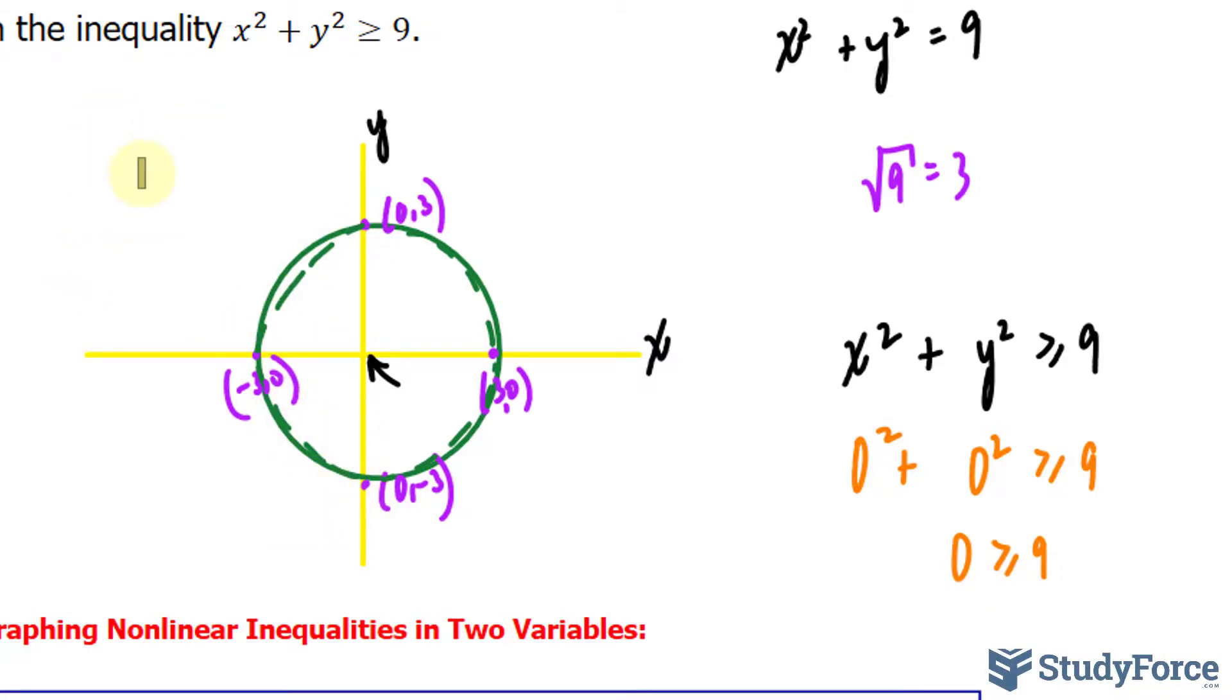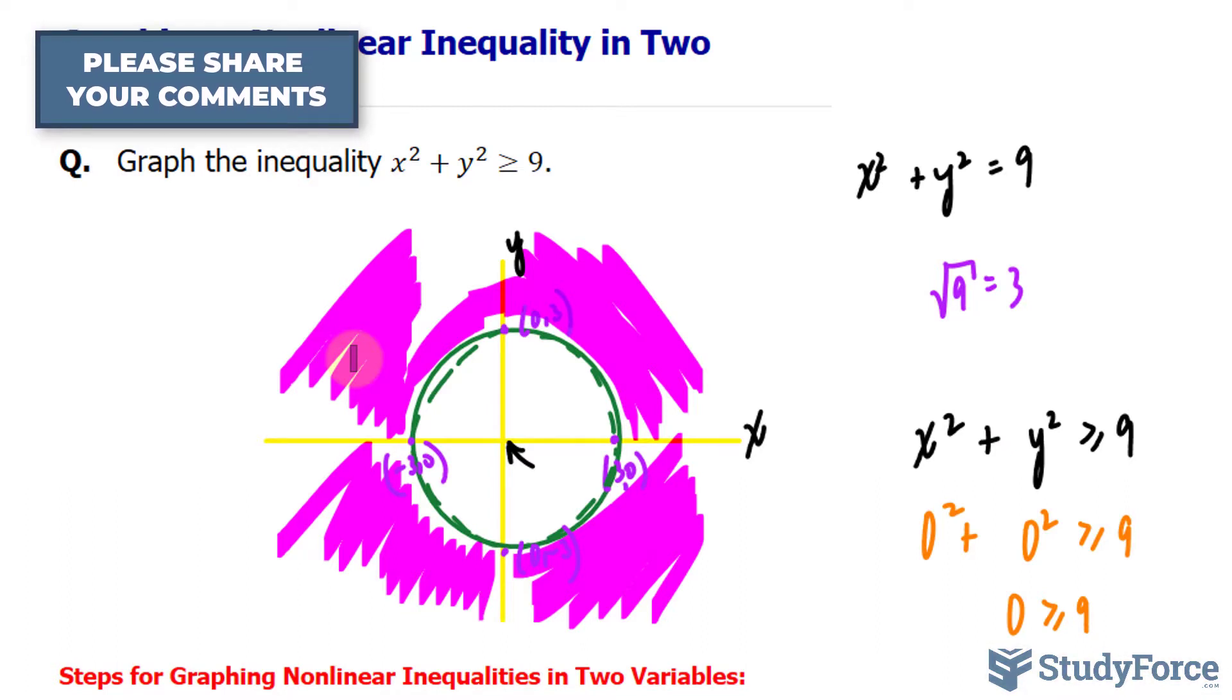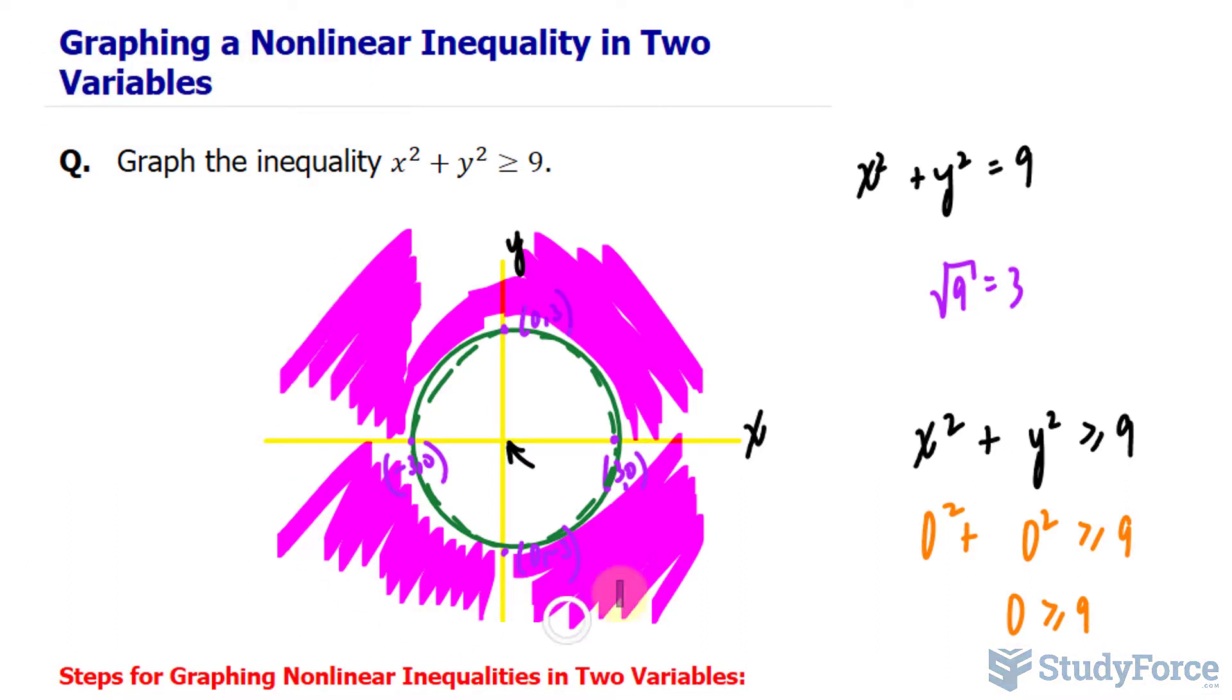Instead, we shade everything outside. So the shaded part outside is where this inequality holds true. Any point out of here makes the statement correct. And there you have it. That is how to graph a nonlinear inequality in two variables.